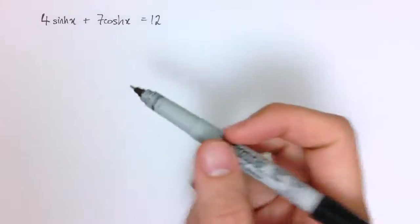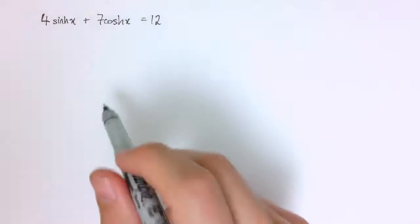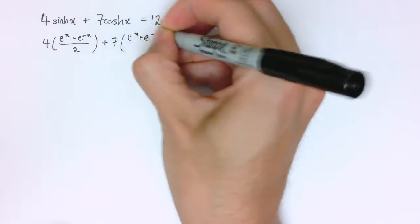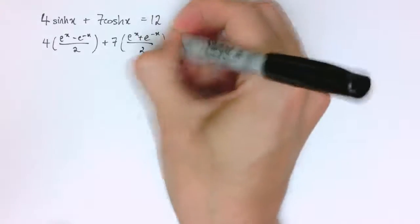We can solve this by using the exponential forms of sinh and cosh, essentially their definitions. So you remember that sinh(x) is e to the x minus e to the minus x divided by 2, and cosh(x) is e to the x plus e to the minus x divided by 2.